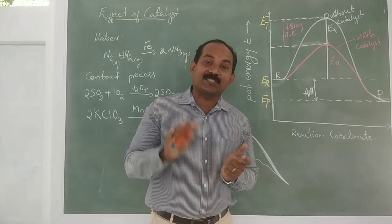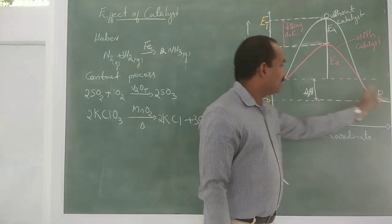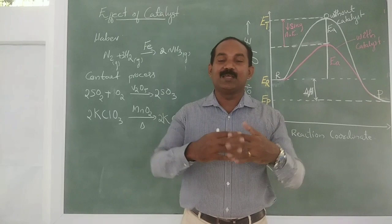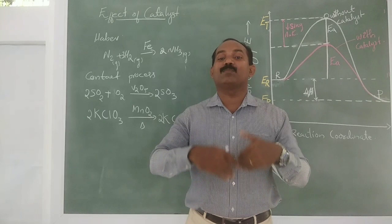Without a catalyst, the activation energy is higher. By lowering the activation energy, catalysts help to attain equilibrium very quickly, and therefore both the rate of the forward reaction and backward reaction are increased.